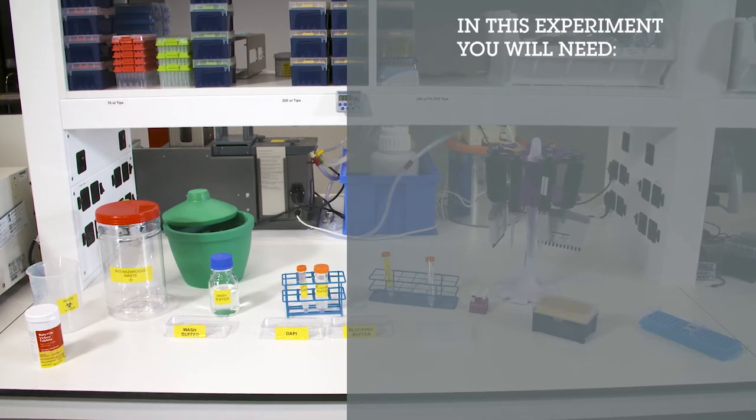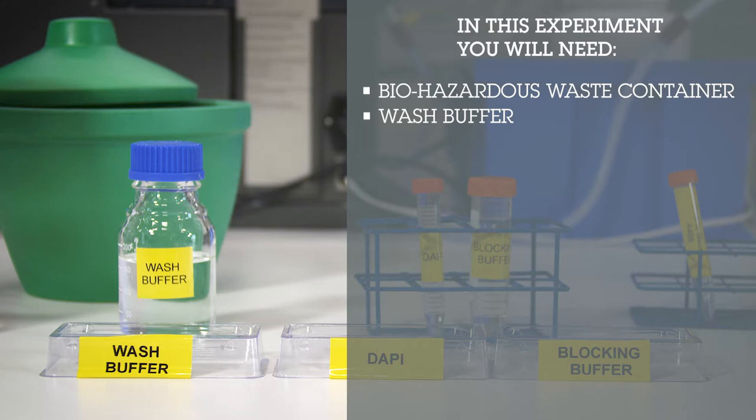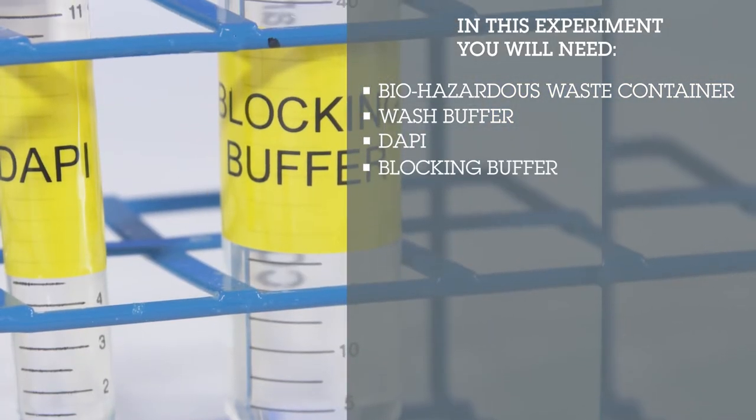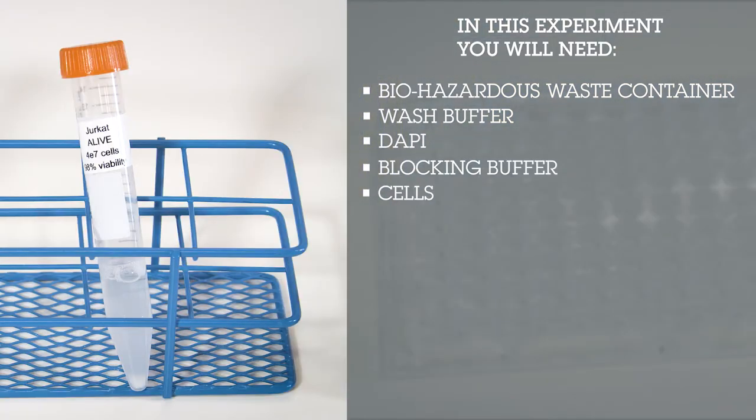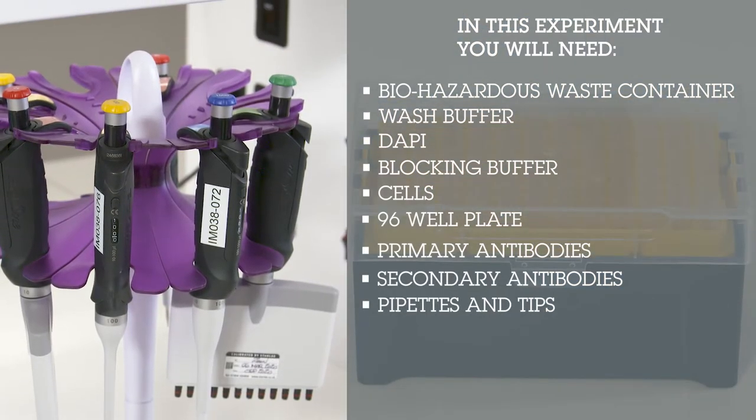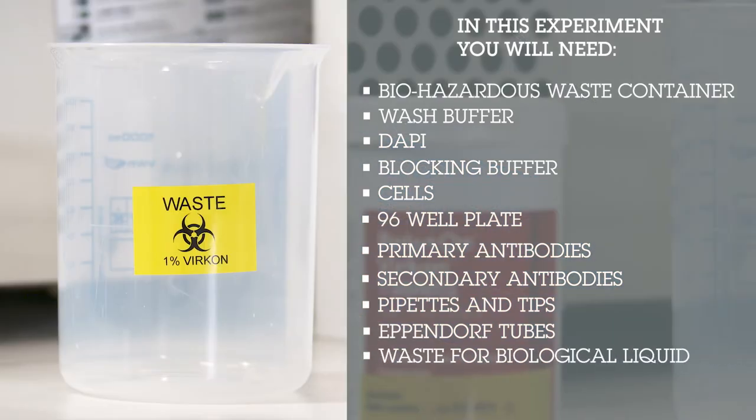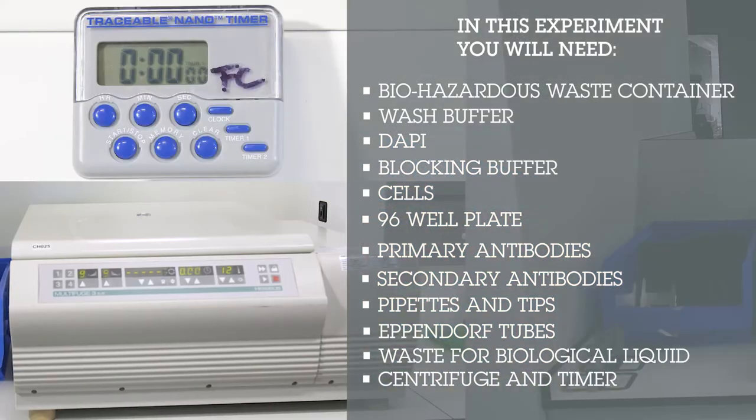What you will need is a biohazardous waste container, wash buffer, DAPI, blocking buffer, cells, 96 well plate, primary and secondary antibodies or conjugated primary antibody, pipettes and tips, eppendorf tubes, waste for biological liquid, a centrifuge and timer.